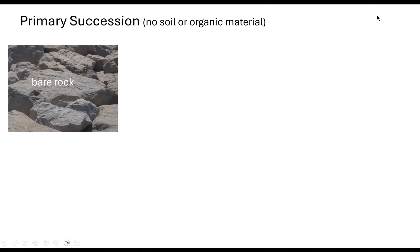Succession starts with bare rock — no soil or organic material. This could be, for example, a volcanic eruption where lava is flowing and then cools. It could be glacial retreat, where global warming has caused glaciers to melt and exposed rock. It could be wind blowing sand that has been deposited, or rivers flowing and depositing silts, resulting in the formation of rock. So we have this new area that needs to be colonised.